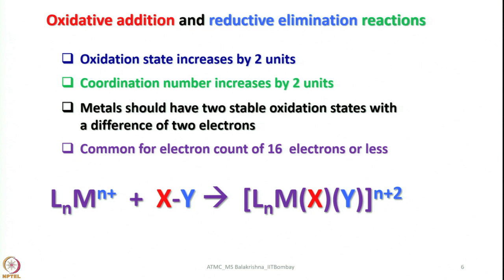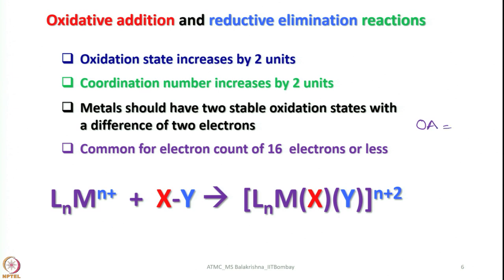This is the typical reaction I showed you already. Similarly, you take a complex with oxidation state N+, after oxidative addition N increases by 2 units. We have taken XY as a neutral molecule, it breaks into 2 anionic ligands and they will be added, as a result coordination number increases by plus 2. In future, if I write OA it is understood as oxidative addition reaction, and RE for reductive elimination. Oxidation state and coordination number - I will be using these abbreviations. Please remember I may not be expanding them.